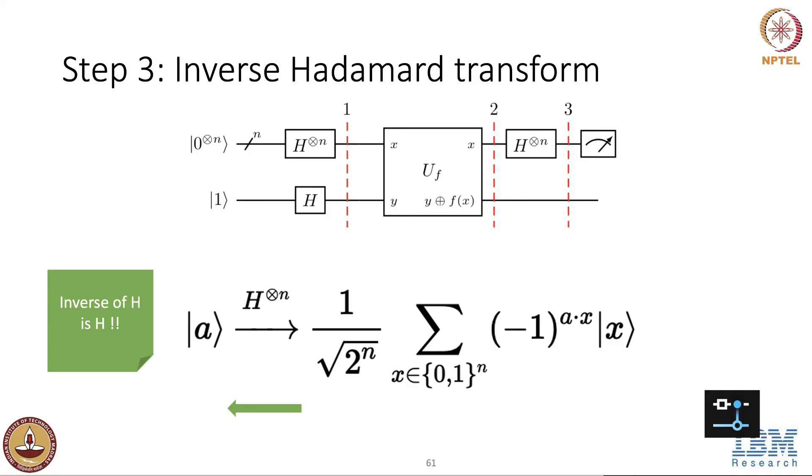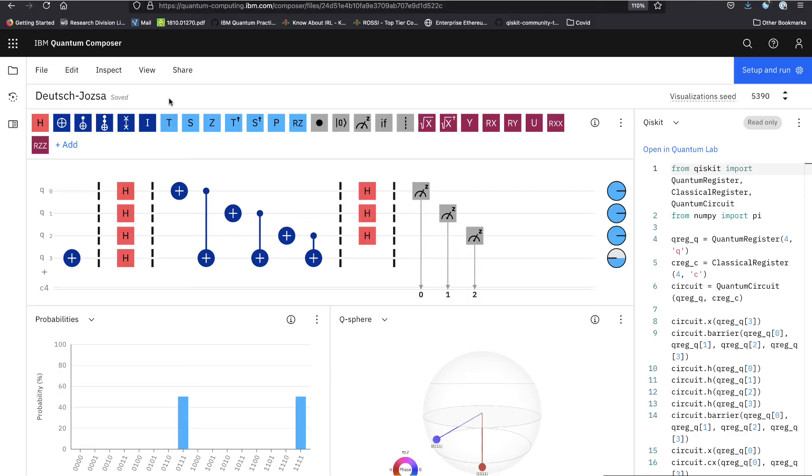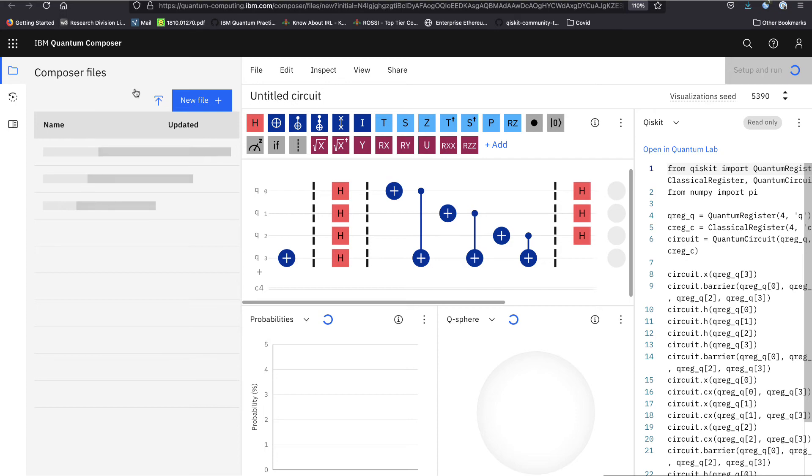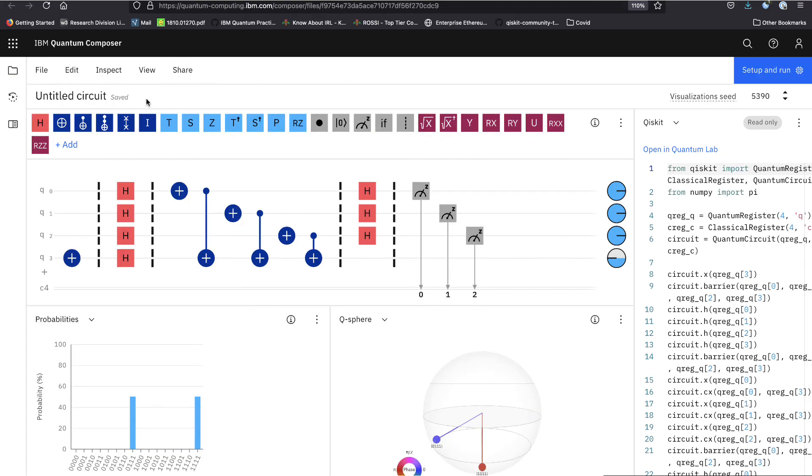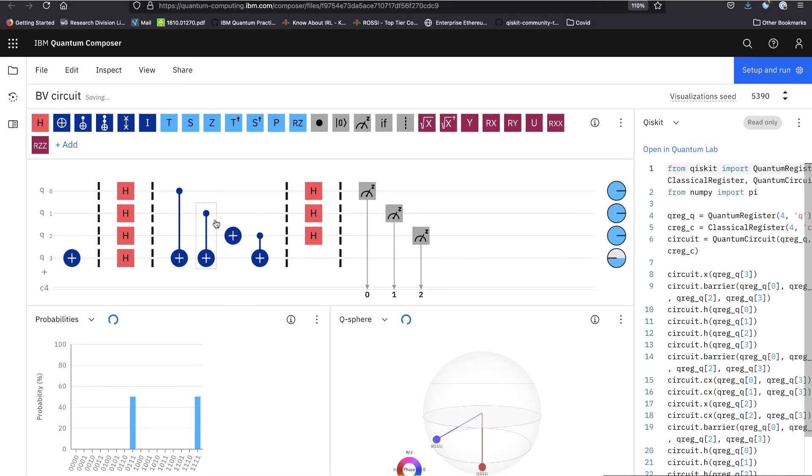So now, let us look into the Qiskit implementation of Bernstein-Vazirani. So this is the circuit that we have for Deutsch-Jozsa. So I will just make a copy because it is the same circuit. So, let us call this the BV circuit.